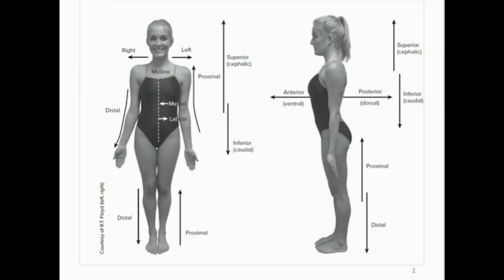Here we have two pictures of a person who is standing in anatomical position. When we're talking medically or referring to parts of the body or where something is relative to other parts on the body, we refer to anatomical position. In short, that's basically feet together, toes pointing forward, facing forward, standing up straight with your arms by your side. One important thing is the palms of the hand are facing forward.